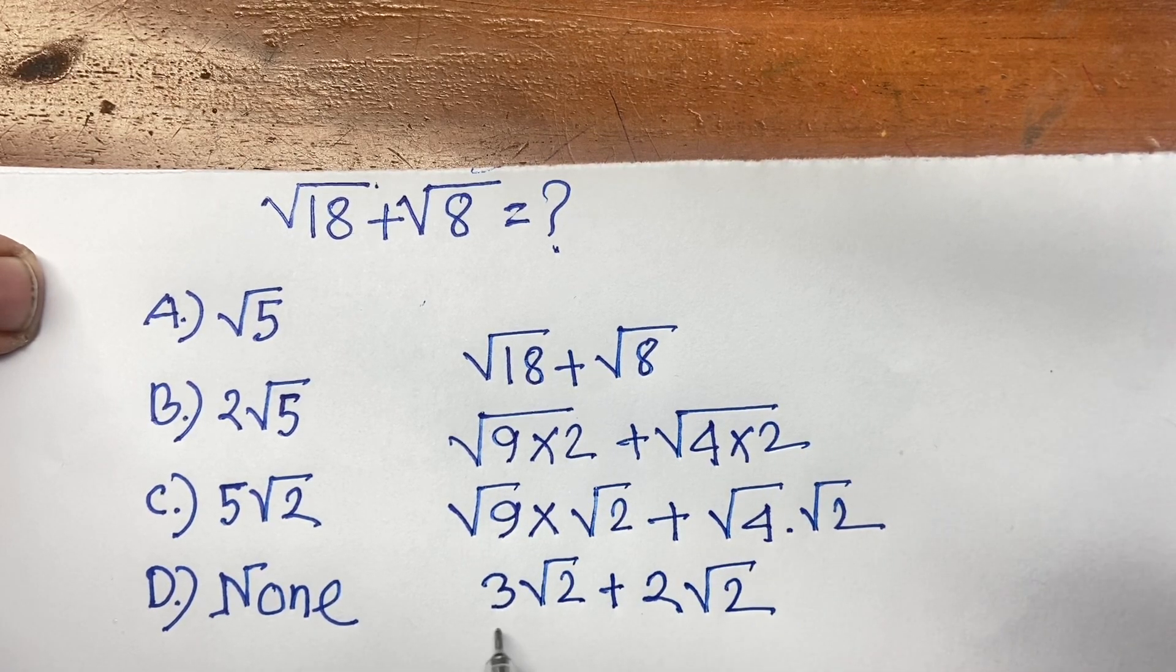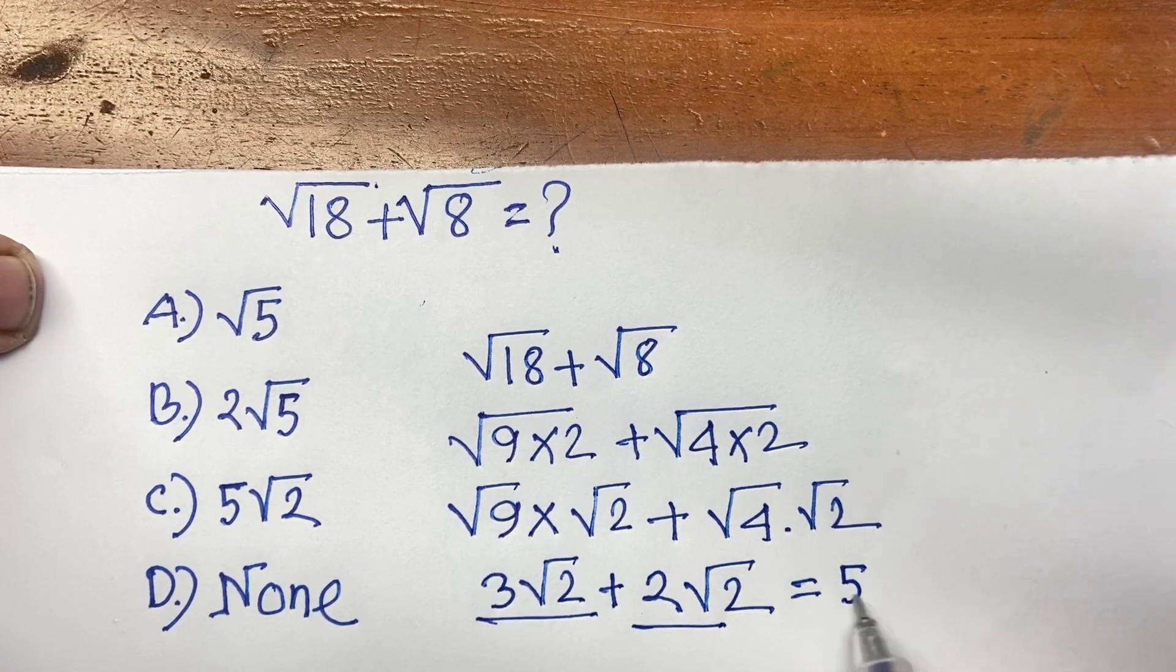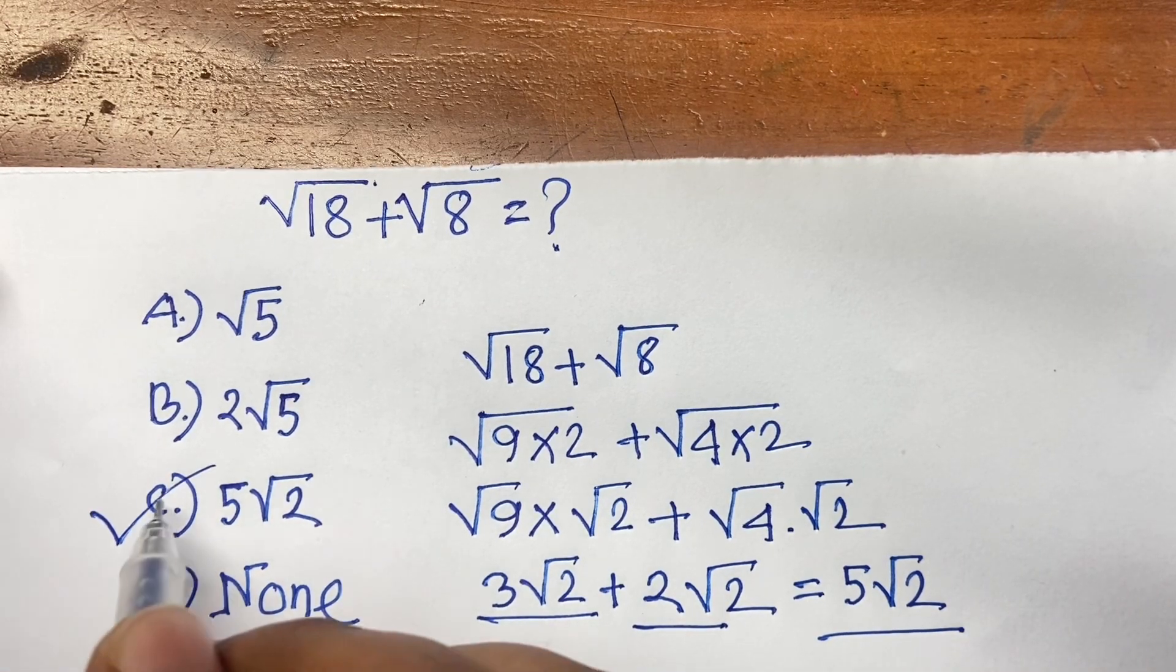Now I can say 3 square root 2 plus 2 square root 2 equals 5 square root 2. So option C is our right answer.